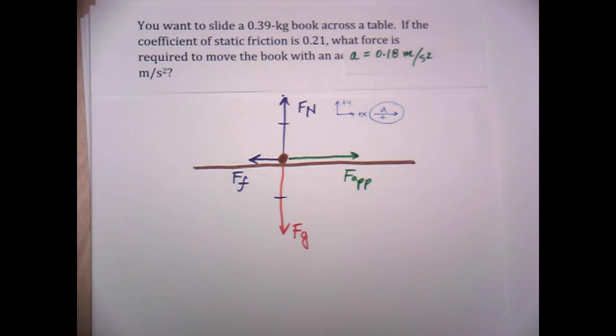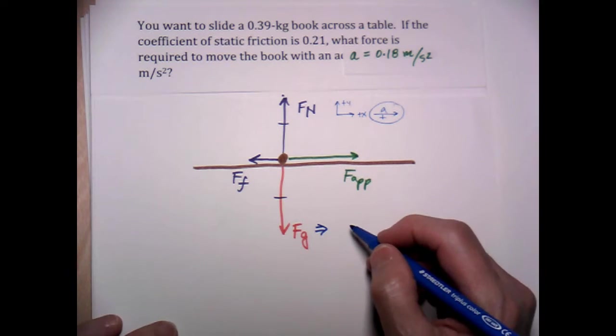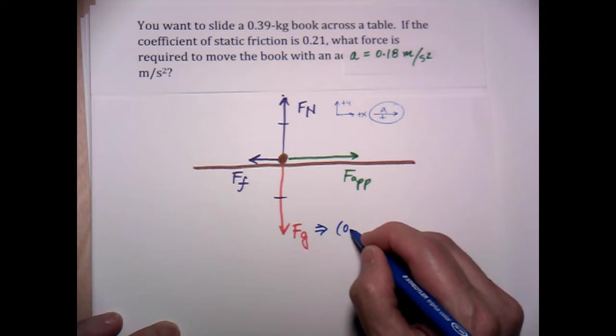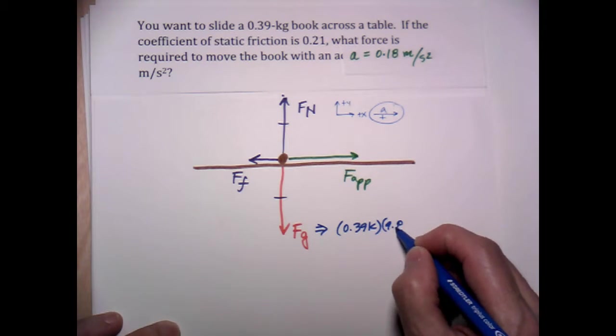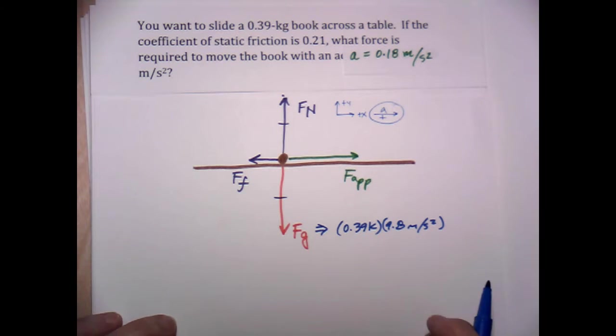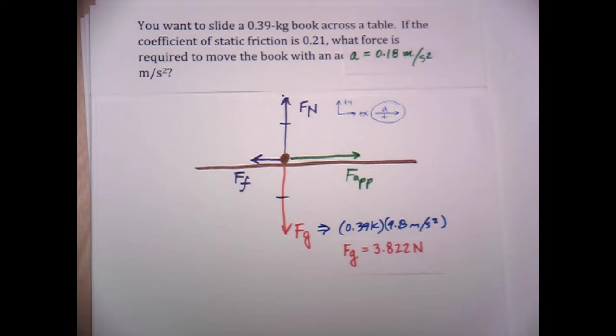So let's go ahead now that we've got our labels and we can fill in some of the information given to us by the problem. First of all, we know that FG is equal to 0.39 kilograms times 9.8 meters per second squared. And that's going to give us 3.822 newtons for FG.